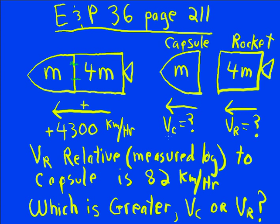We want to know the velocity of the capsule after the separation and the velocity of the rocket. We're told the capsule has a mass m, the rocket has a mass 4m, and that the relative velocity after the separation is 82 kilometers per hour. In other words, if you were on the rocket here and you measured the speed of the capsule,